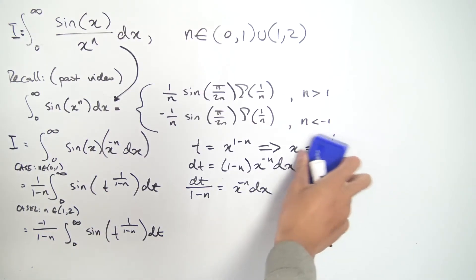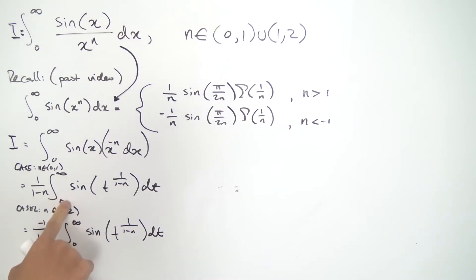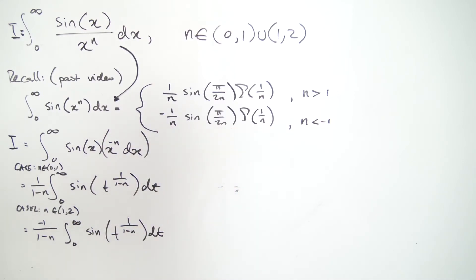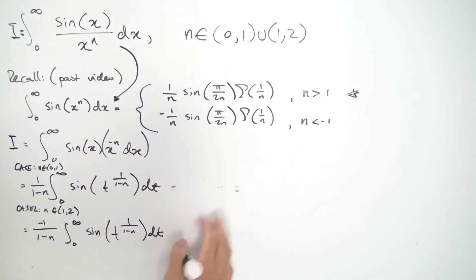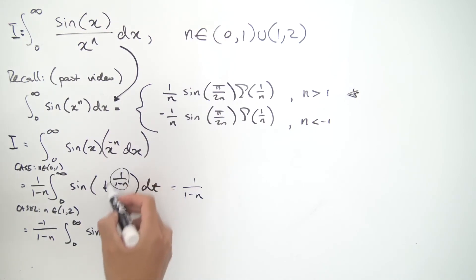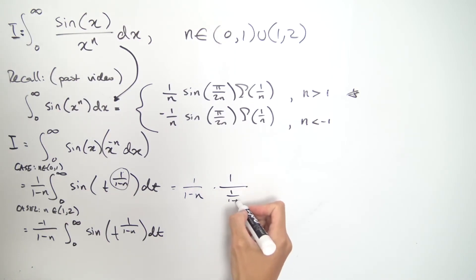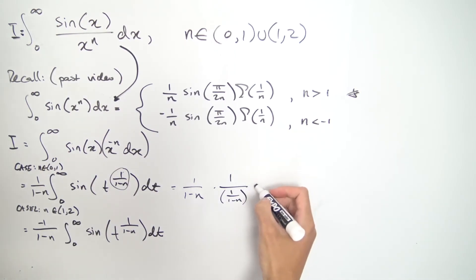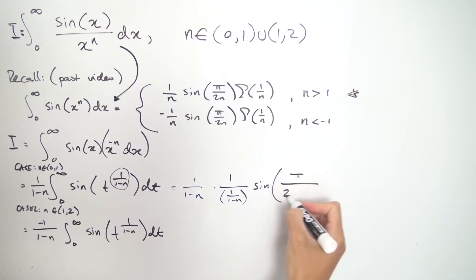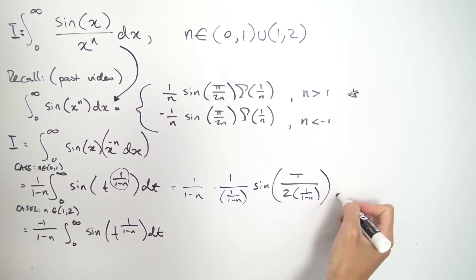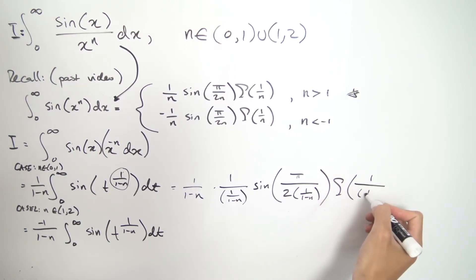In Case 1, n is positive, so we use the top expression from our past result. We have the constant 1/(1−n) out front, and the power is 1/(1−n). We plug 1/(1−n) into all three n-values in the formula, giving: (1/(1/(1−n))) · sin(π/2 · (1/(1−n))) · Γ(1/(1/(1−n))).